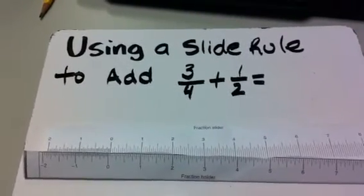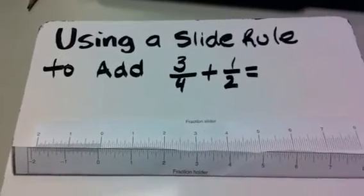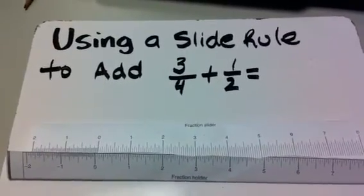Welcome to math. Today we are adding using a slide rule. We're adding fractions: 3 fourths plus 1 half.